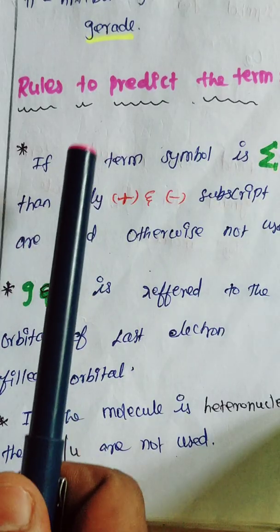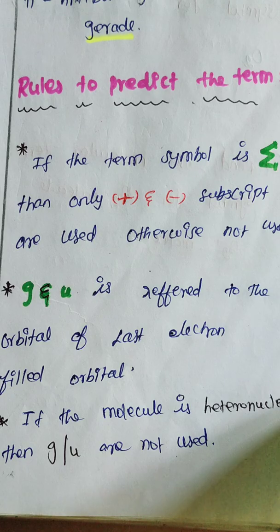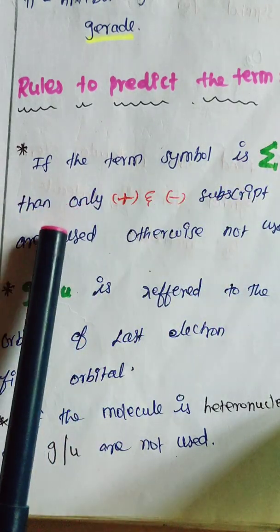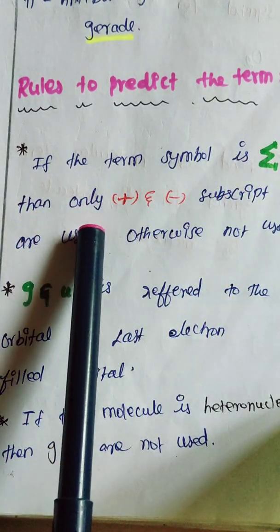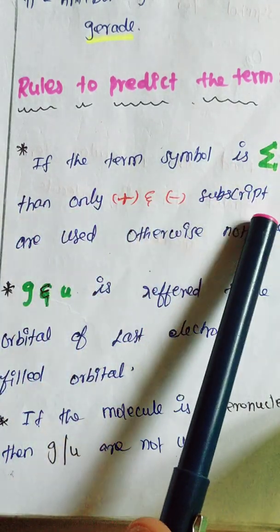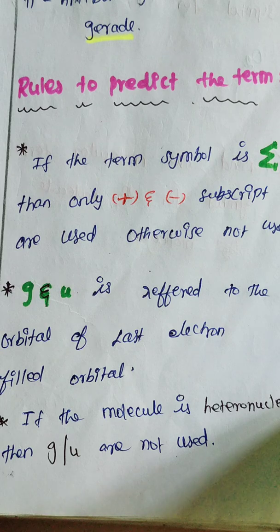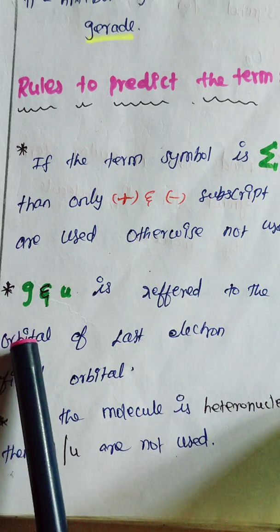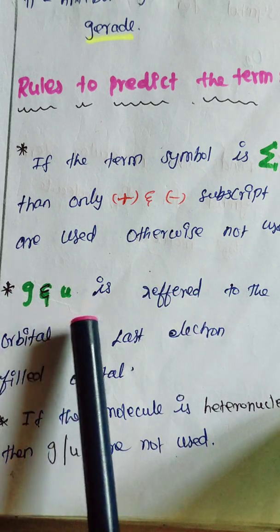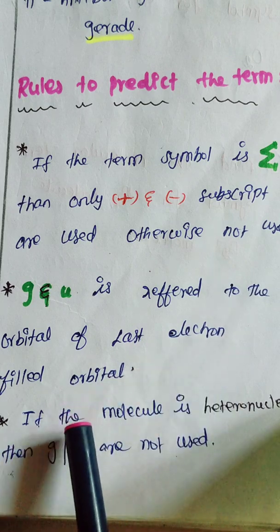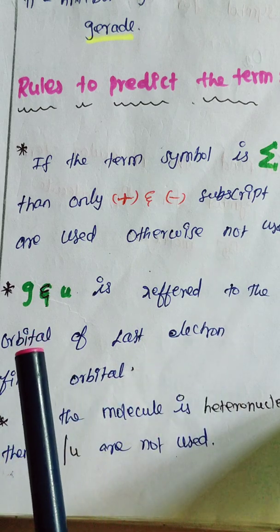Now we mention the rules to predict the molecular term symbol. The first rule: if the term symbol is Sigma, then only we use the plus or minus superscript — otherwise it is not used. The second rule: gerade and ungerade are assigned based on the orbital where the last electron is filled.